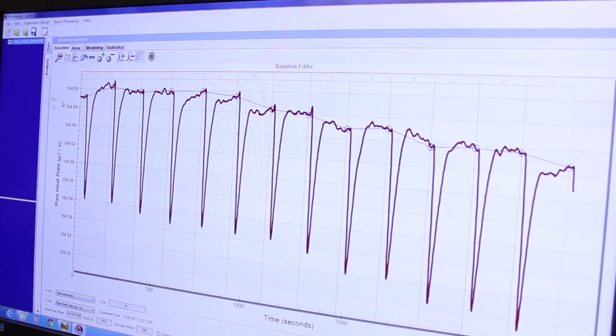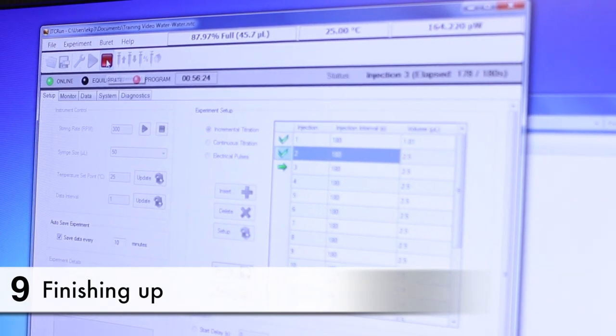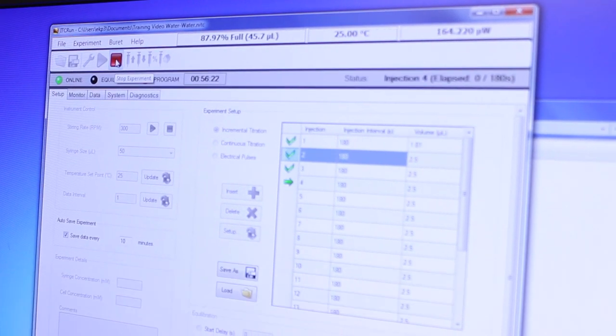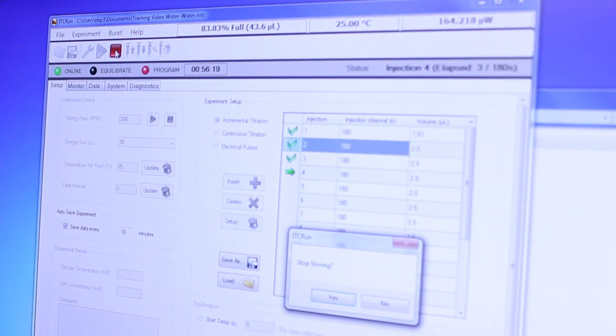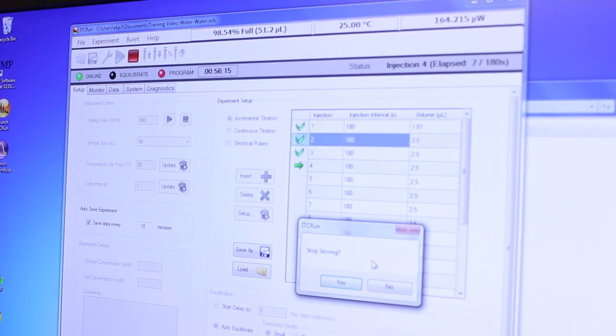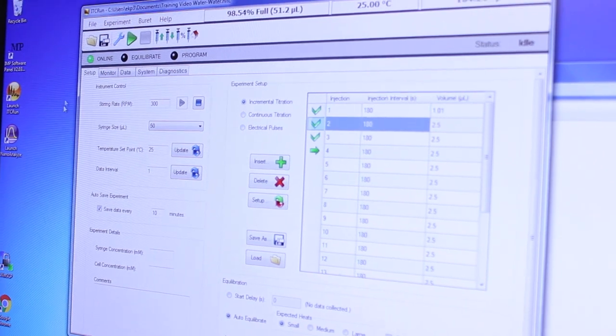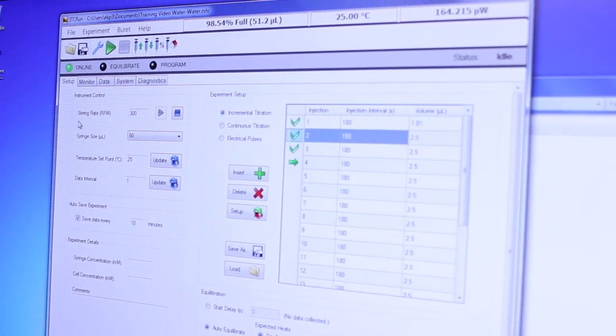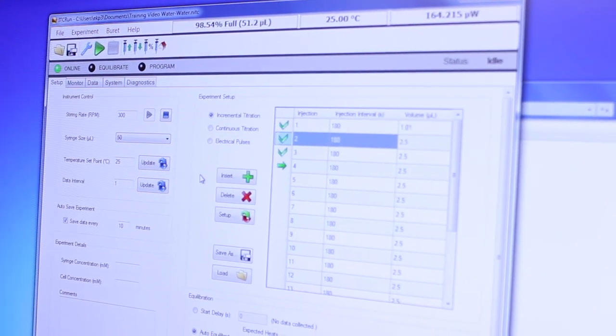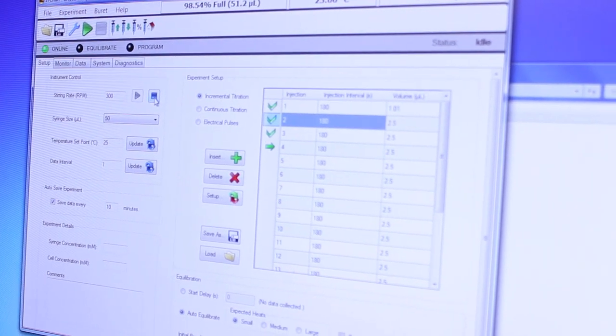If you wish to stop the data collection early you can click the stop experiment button here and it will ask you if you want to stop stirring or not. If I choose no it will stop the data collection but continue to stir and if at some point such as now we wish to stop the stirring we can click on the stop stirring button here.